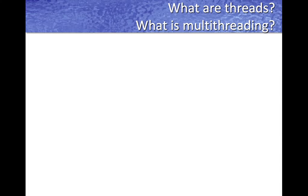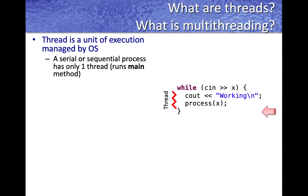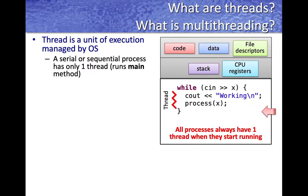Threads are essentially a unit of execution managed by the operating system. A serial or sequential process has only one thread, called the main thread, that runs the main method in a program. Programs have code, data, and files associated with them, and each thread also has a stack which is used for calling methods.